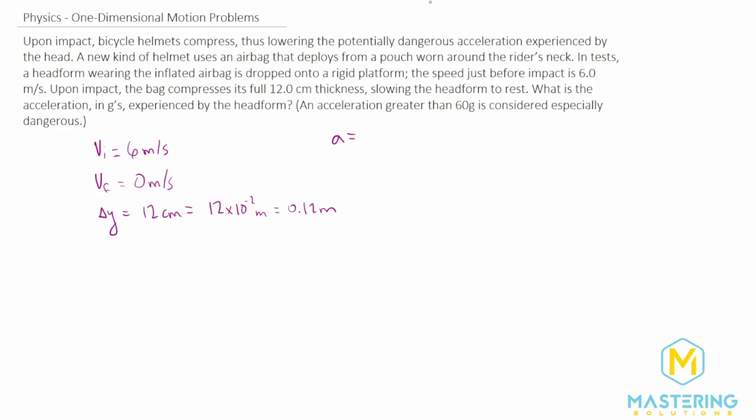When we look at delta Y, one change we need to do is in this question, going up is the positive Y direction and going down is the negative Y direction. So we're dropping it down. This delta Y is going to be a negative 12 centimeters. All these will also be negative.